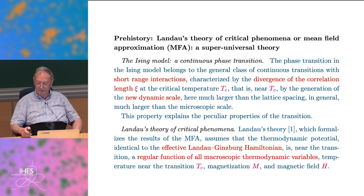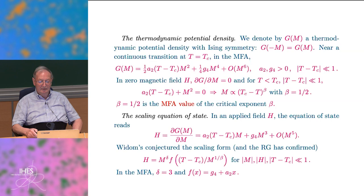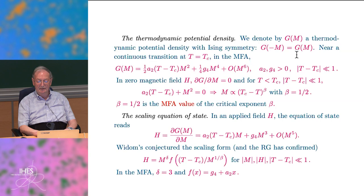Therefore, one should be describing phenomena just in terms of the distance to the critical temperature, the magnetization, and the field. In Landau theory, you consider the thermodynamic potential density, which is a macroscopic object. Near the transition, everything should be a regular function of the deviation of temperature, the magnetization, and the magnetic field.